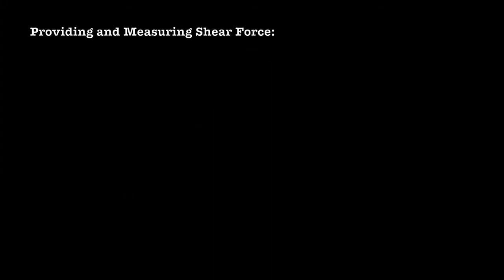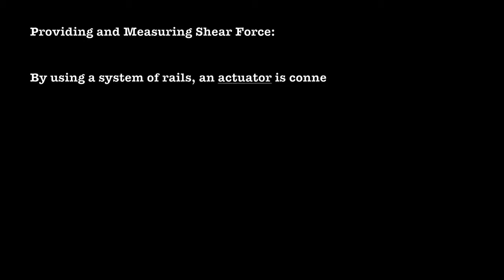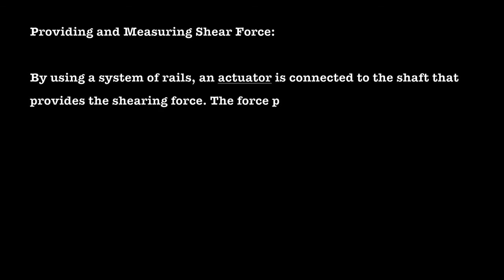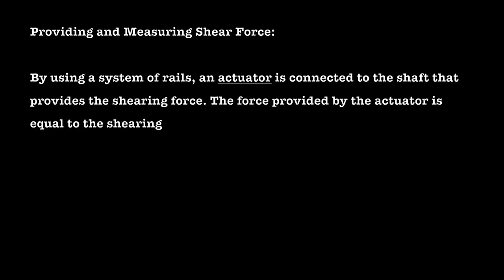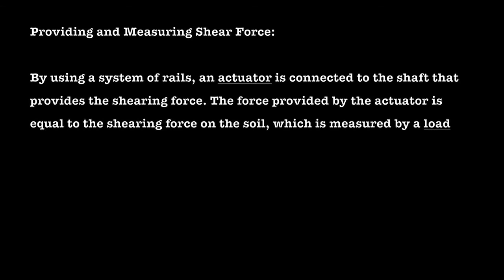By using a system of rails, an actuator is connected to the shaft that provides the shearing force. The force provided by the actuator is equal to the shearing force on the soil, which is measured by a load cell placed on the end of the actuator.